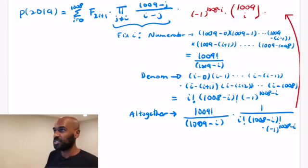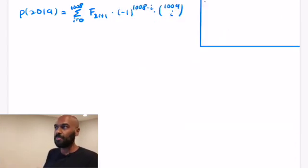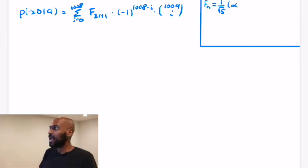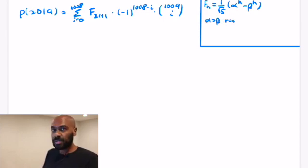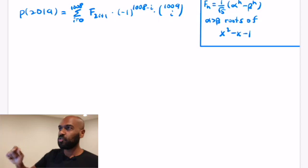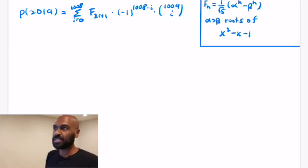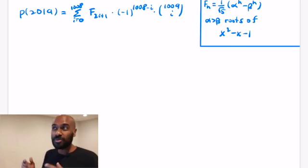The product simplifies to a binomial coefficient, giving us a hint about what to expect next. We'll also use the known Binet formula for Fibonacci numbers: F_n equals (1 over root 5) times (alpha^n minus beta^n), where alpha and beta are the roots of x squared minus x minus 1. Replacing F sub (2i+1) with this formula and incorporating the binomial coefficient, we can apply the binomial theorem to collapse the entire sum into a much simpler expression.